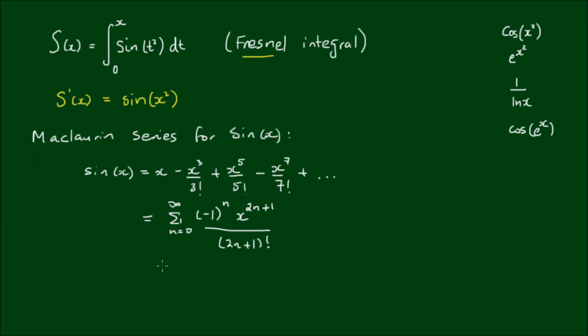Now since we have the Maclaurin series for sin(x), we can also then deduce that the Maclaurin series for sin(t²) is, and all we do here is simply substitute t squared for x. So we have the sum from n equals 0 to infinity, of (-1)^n, by (t²)^(2n+1), all over (2n+1) factorial.